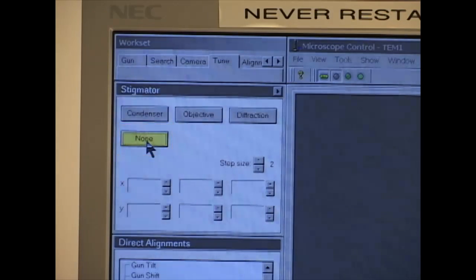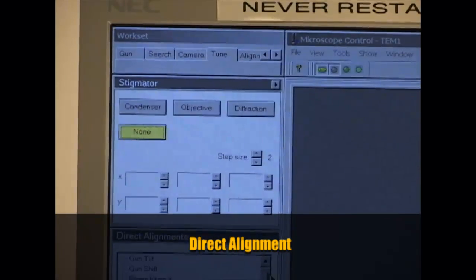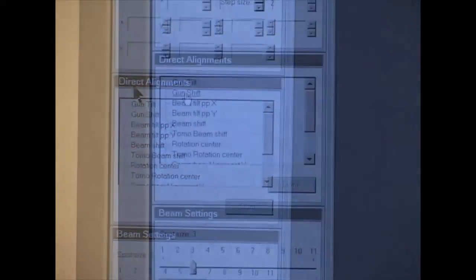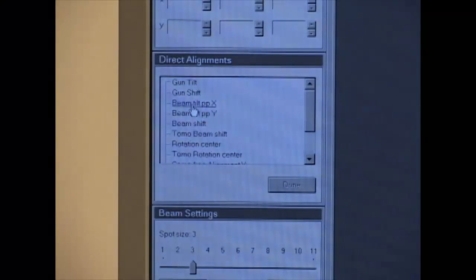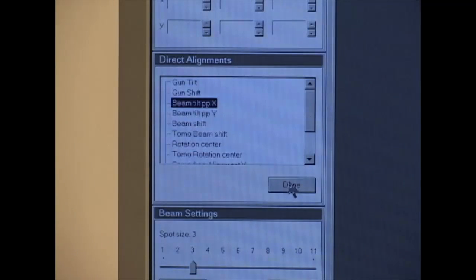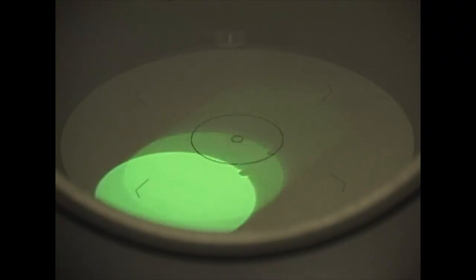Now we do Direct Alignments. Select Tune, User Interface, Direct Alignments, and Beam Tilt PPX. Notice that there appears to be two beams. Adjust multifunction X and Y until the two beams merge to one. Click Done to save this setting. Repeat the beam tilt PPY and adjust the multifunction X and Y knobs until there is one beam image.